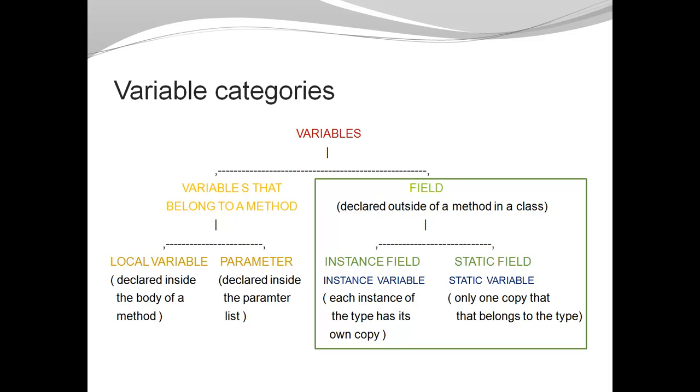There are also variables that are not associated with one specific method. Those variables are called fields, and they're declared outside of a method and inside of the class. There are two kinds of fields: instance fields, also called instance variables, and static fields, also called static variables or class variables.